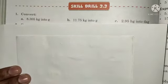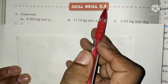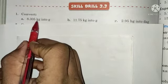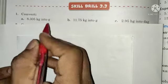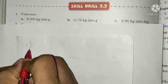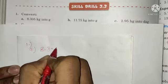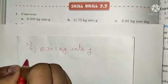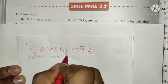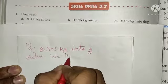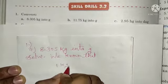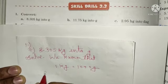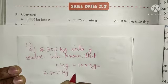Class 5 Skill Drill 3.3, Question No. 1: Convert 8.305 kg into grams. We know that 1 kg is equal to 1000 g, so 8.305 kg is equal to 8.305 × 1000.